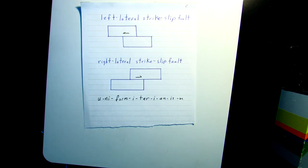In a right lateral strike slip fault, the other side will appear to have moved to the right. It will appear the same to someone standing on the other side of the fault. You will have appeared to have moved to his right.